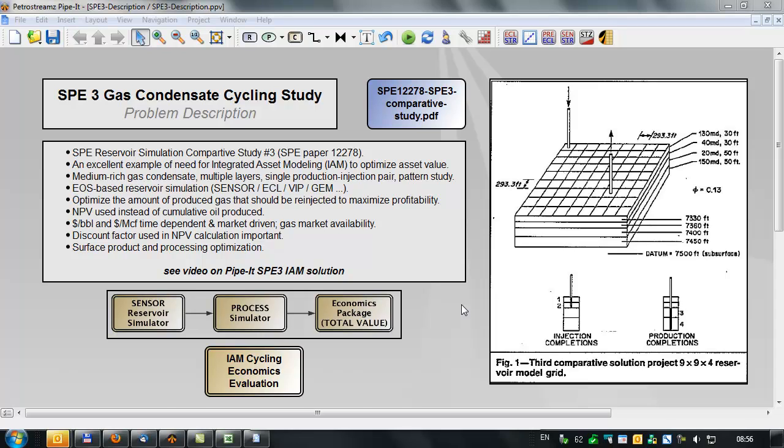This problem is very sensitive to prices, price forecasting, and the entire economics evaluation including discount factor used for the NPV calculation. Surface product and processing is also an issue and can be brought within the scope of optimization.